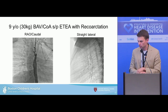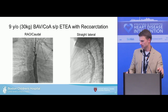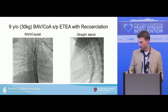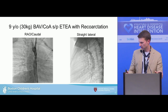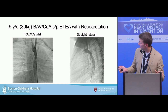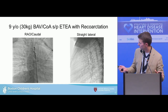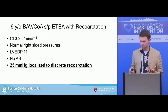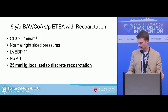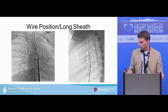Here we have a nine-year-old who's 30 kilograms, bicuspid valve, coarctation status post end-to-end anastomosis with re-coarctation. This is my scale picture. We do a straight lateral view, and the other angle — you want to get the ascending aorta out of the way. Give yourself caudal angulation to look up at the lesion. We see a discrete lesion right at the level of the left subclavian with an accessory vertebral artery. At 30 kilos, we'll be able to put a stent in through the scrum that can go to adult size, likely needing re-dilation once adult-sized. You can see significant collaterals as well.